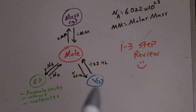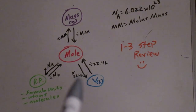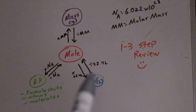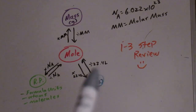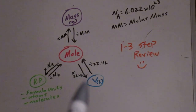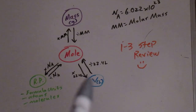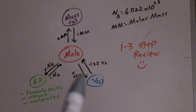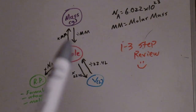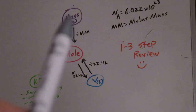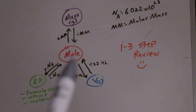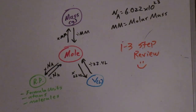Over here, volume island. We have our 22.4 number. Going toward Moe Island is always dividing, and going towards volume island is multiplying by 22.4 liters. Going to mass island, you multiply as you go up and divide as you go down. We also have a stoichiometry island prepared over here, as well as some problems.